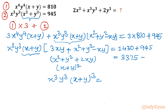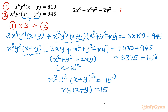We know 3375 is 15³, so I write 15³ on the right-hand side as well. Since both sides are perfect cubes, I take the power of 1/3 on both sides. This gives: xy(x + y) = 15. This is a very important Equation 3 for this question.